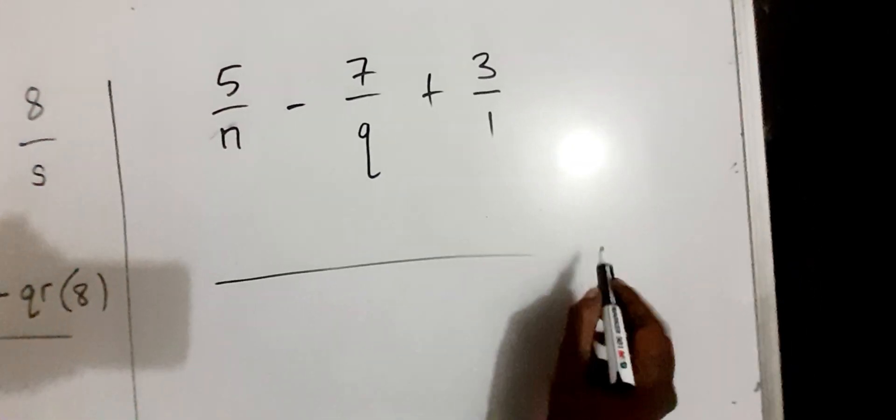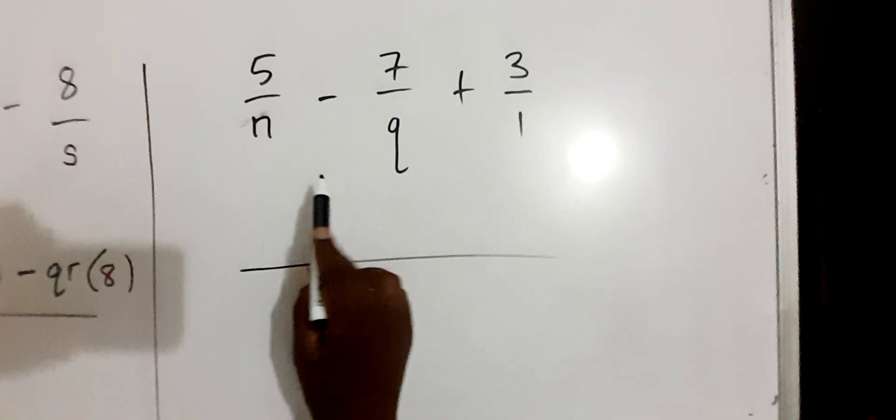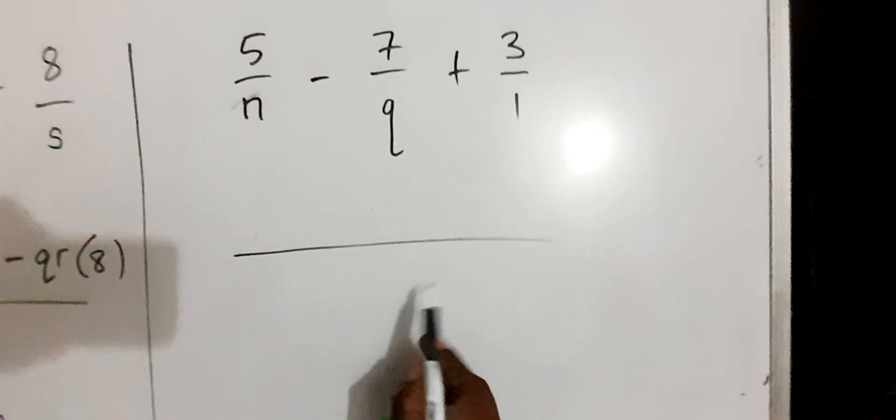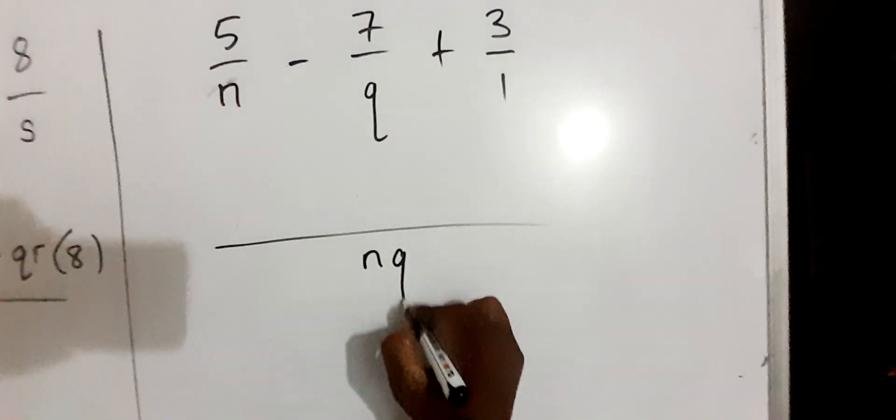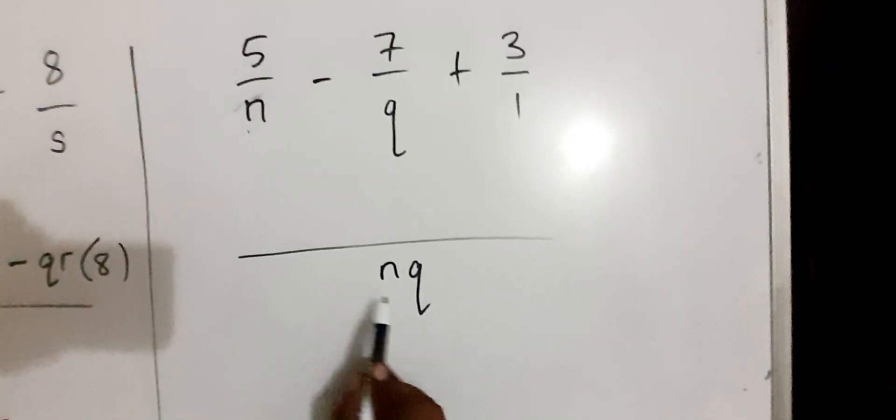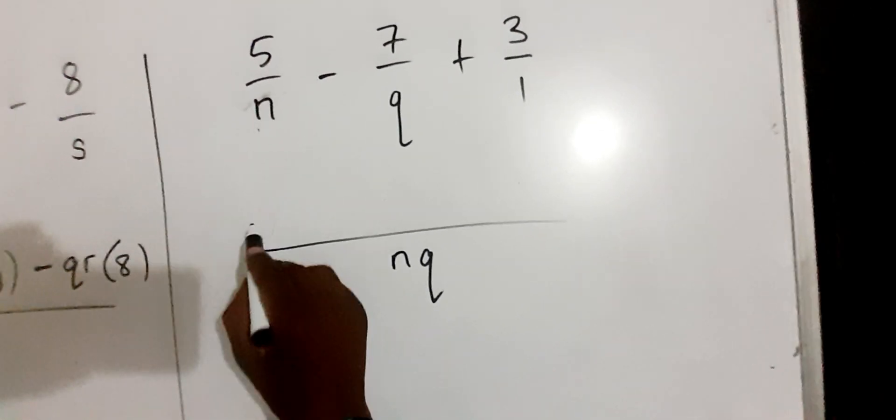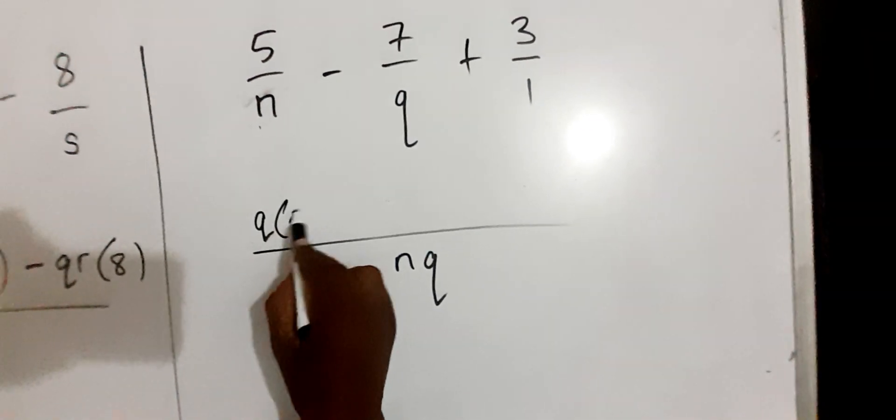And because of that, the lowest common number that N, Q, and 1 can divide into is just NQ. So if you say N into NQ, we are going to be left with Q, so it's going to be Q multiplied by the numerator, 5.